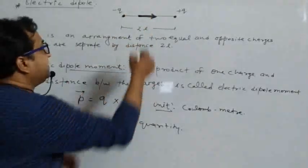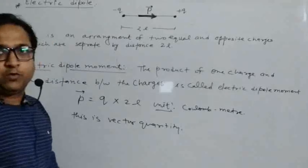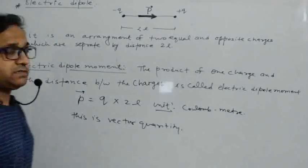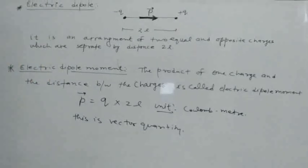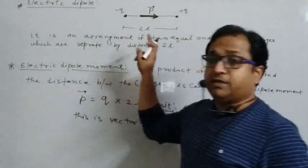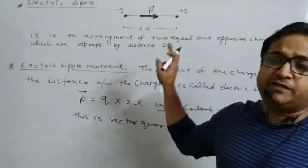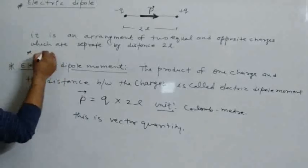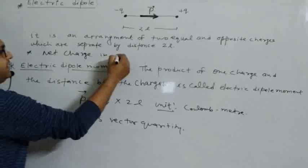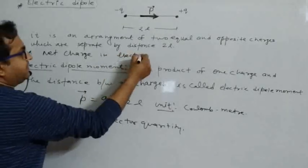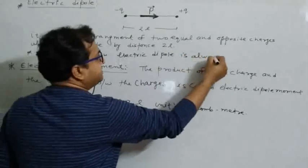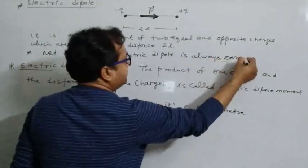This is the electric dipole moment noted. The net charge in an electric dipole is always zero.